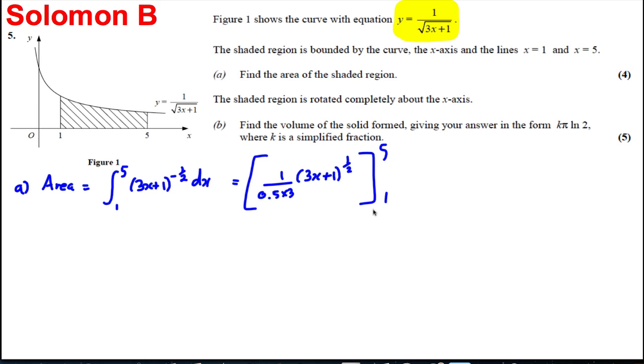1 divided by a half times 3 is actually 2 thirds. So I can take the 2 thirds outside the bracket and I'm really substituting into 3x plus 1 to the half or the square root even. It might be easier for us to think of in this case. So the square root of 3x plus 1 between 5 and 1.